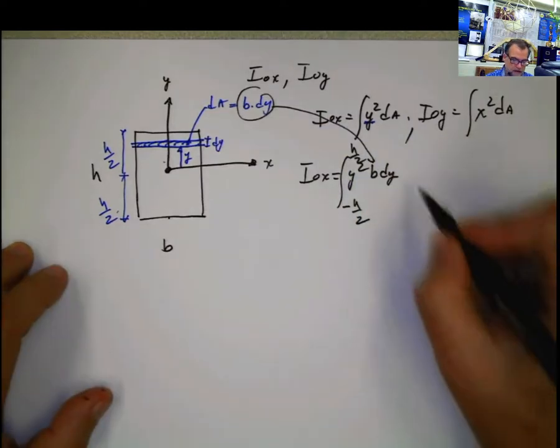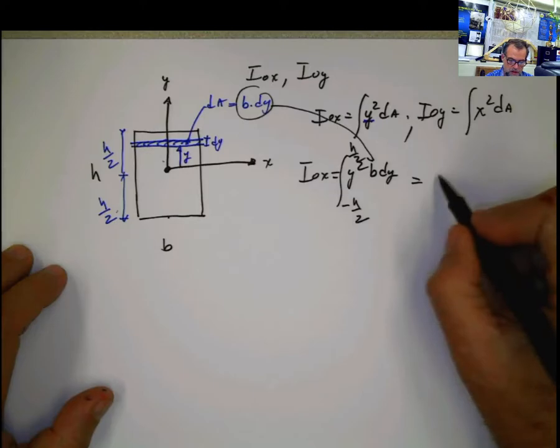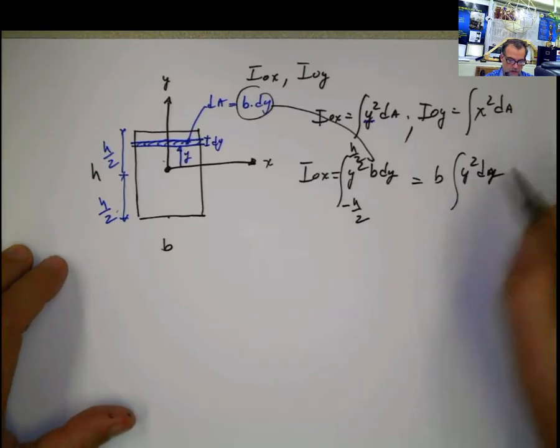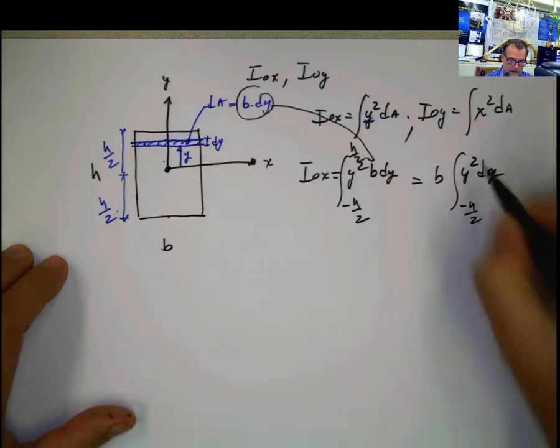Once you have that, solve the integral. This b is constant. Take it outside. Integral of y squared dy from negative h half to h half.